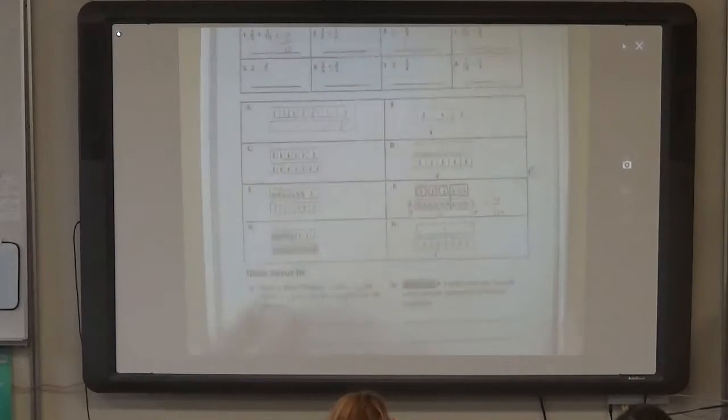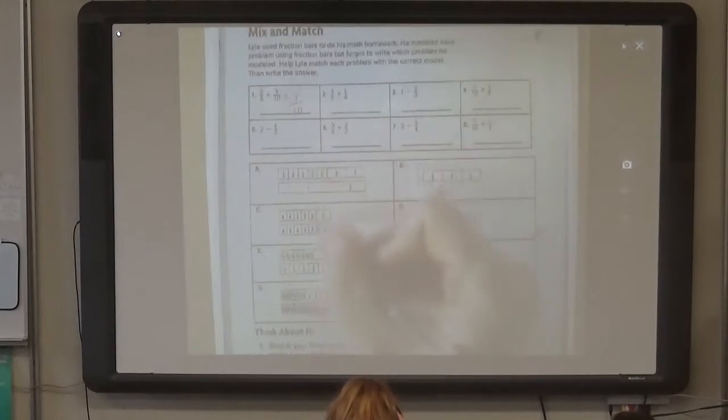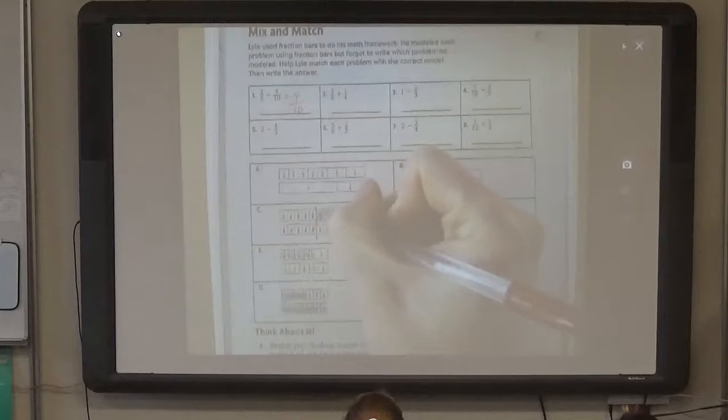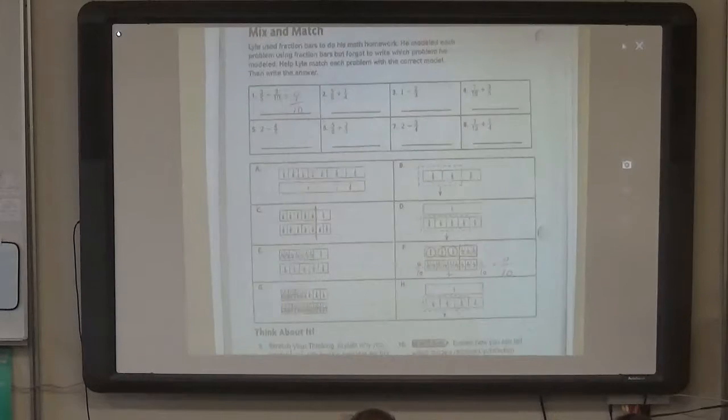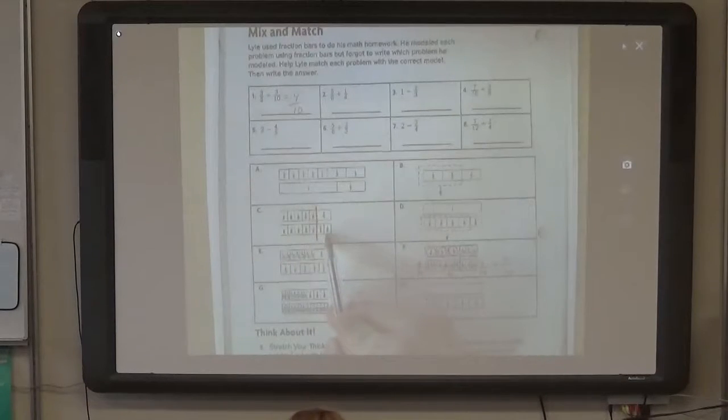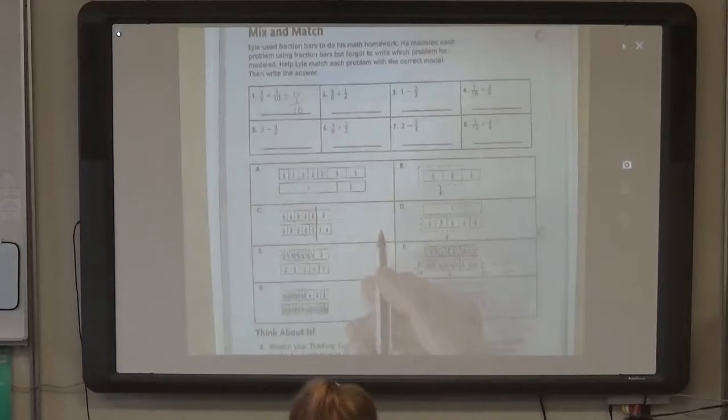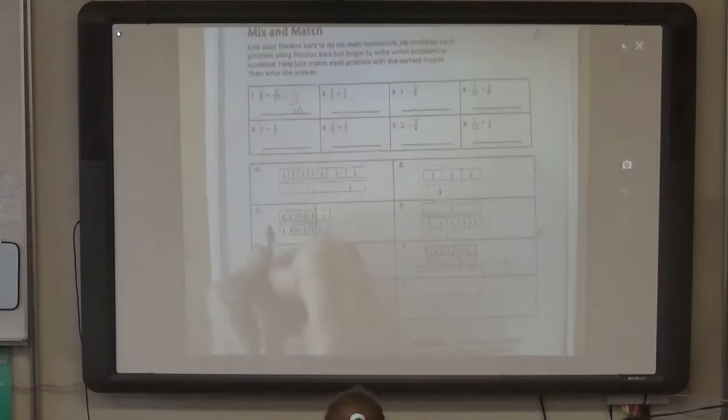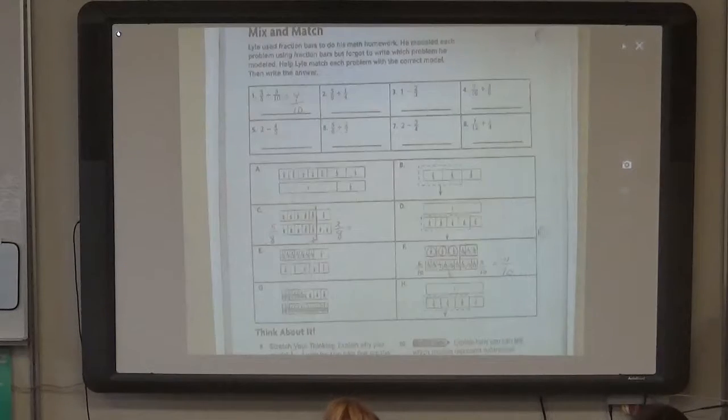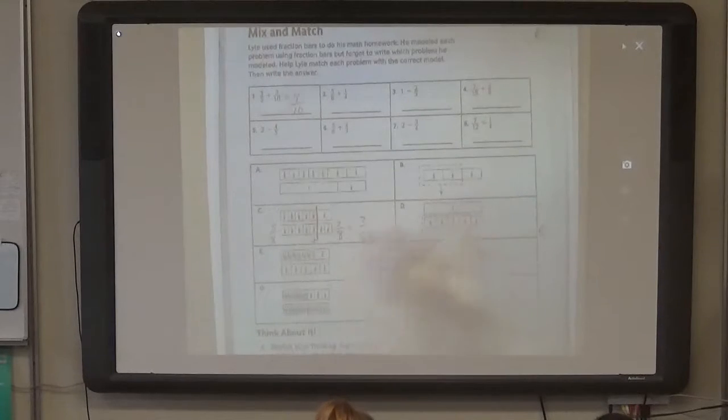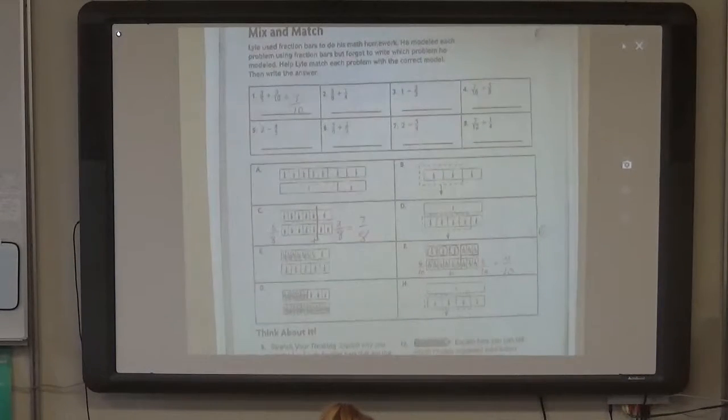Let's look at C. We've got five-eighths plus one-fourth. And here is the line. We call that a line of equivalence, or a line of equality. And what does it show one-fourth is equal to? How many eighths? Two. Two-eighths. So this is five-eighths plus two-eighths. Which equals? Seven-eighths, obviously. Great. And that's how I want you to use these models.